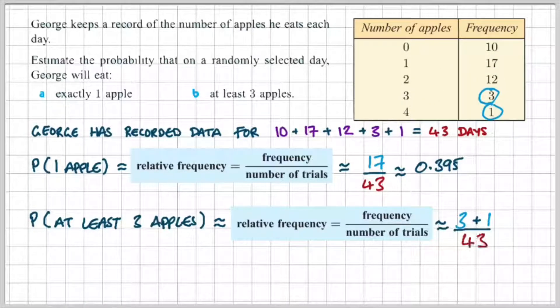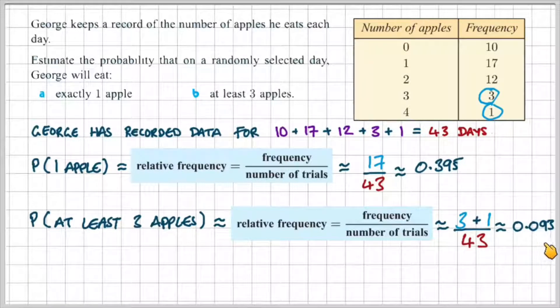So, from the table, we can see that George eats three apples three days and four apples on one day. So, in total, we can say that's three plus one, which makes four over 43, which gives us a probability of 0.093. Or, about 9% of the time, George is going to eat at least three apples.